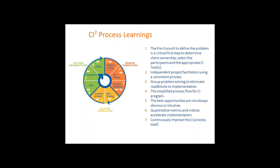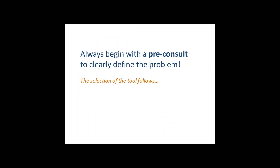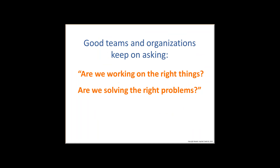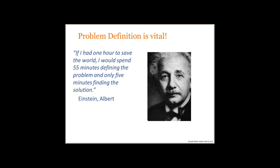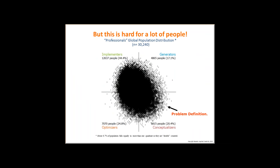Always begin with a pre-consult to clearly define the problem — the tool follows. Good teams are always asking: are we working on the right things, solving the right problems, before we jump in? This goes back to the famous Einstein quote: if I had an hour, I'd spend 55 minutes defining the problem and only five minutes solving it. This is the key to the pre-consult. It's hard for a lot of people — so many of us are on the implementation side where the tendency is, I've got to hurry and implement something and I've got a tool.